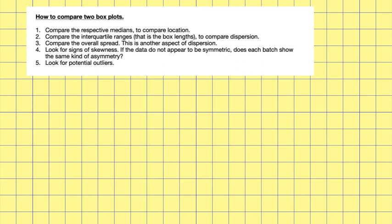Now, to compare two box plots: one, compare the respective medians to compare location; two, compare the interquartile ranges — that is the box lengths — to compare dispersion; three, compare the overall spread, which is another aspect of dispersion; four, look for signs of skewness — if the data do not appear to be symmetric, does each batch show the same kind of asymmetry? Also look for potential outliers.